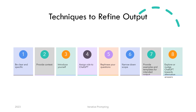You can use multiple techniques to refine output, some of which we have already learned and some we shall cover in upcoming videos in the series. Some of these include: be more clear and specific, provide context, introduce yourself, assign a role, rephrase your questions, narrow down scope, provide examples and templates for intended output, and explore or nudge ChatGPT towards alternative answers.